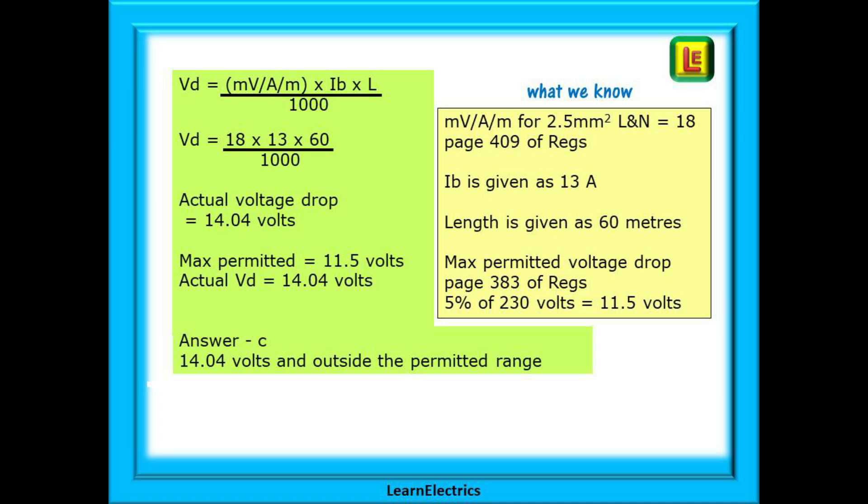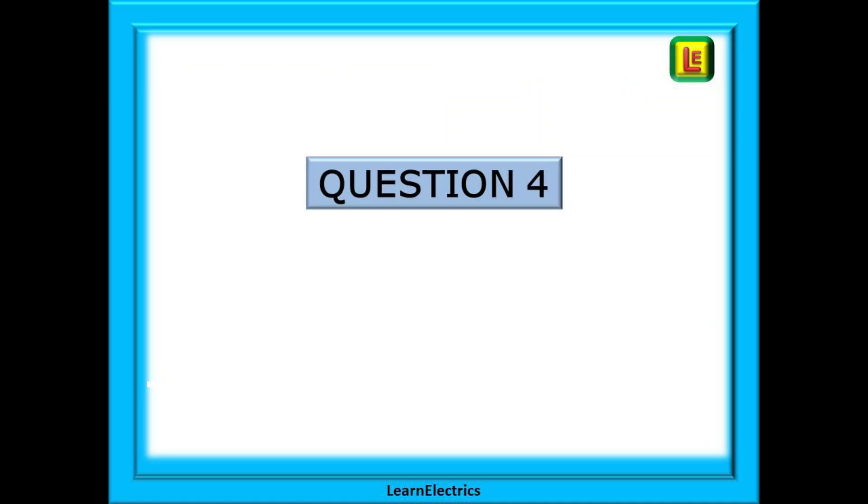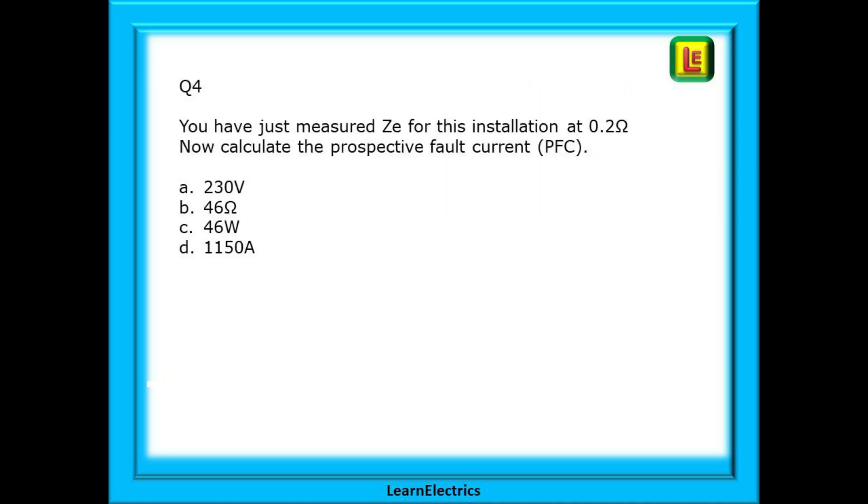Question 4 follows now. You have just measured ZE for this installation at 0.2 ohms. Now calculate the prospective fault current or PFC. Again pause the video.